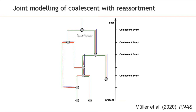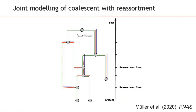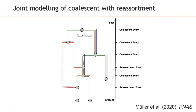Network lineages coalesce with each other backwards in time, as shown here by the coalescent events. At reassortment events, a random subset of segments follow each new lineage. For example, the green segment follows the left parent, while the other two segments follow the right parent. This allows us to infer reassortment networks and the embedded segment trees for sampled sequencing data.